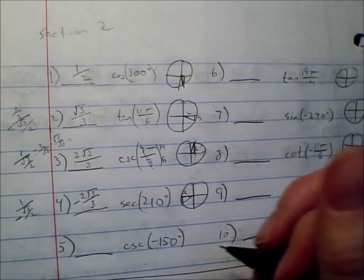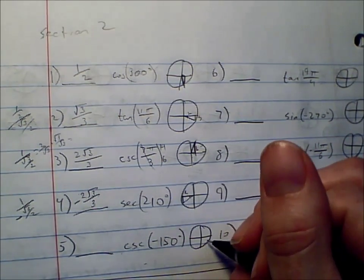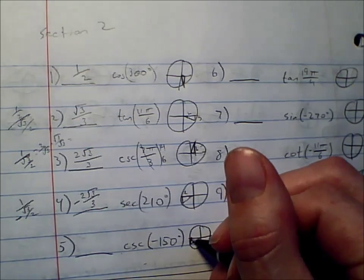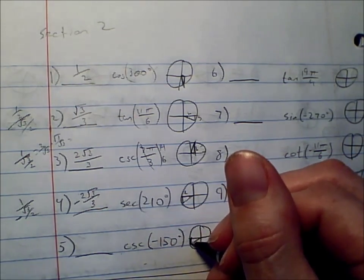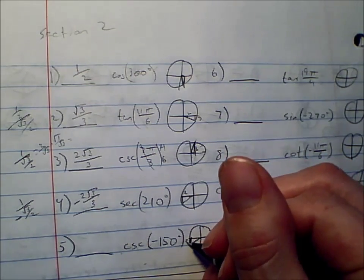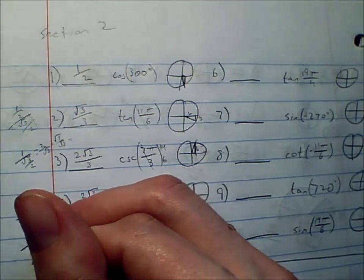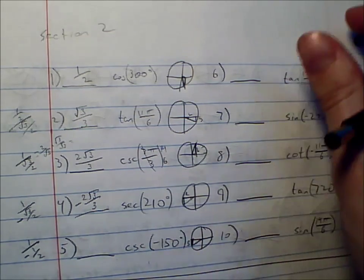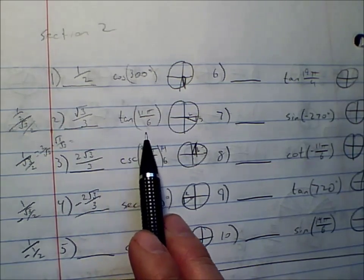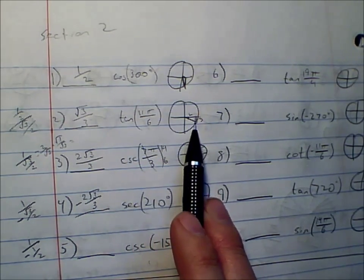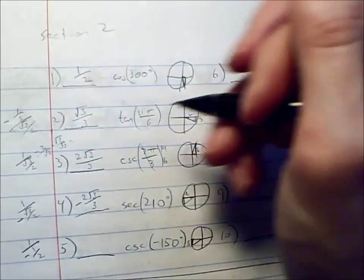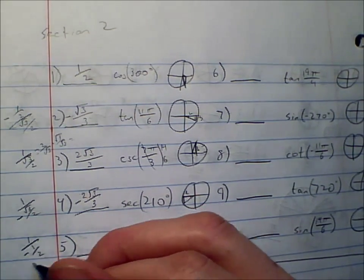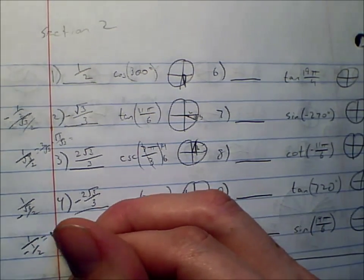Number 5. Cosecant of negative 150 degrees. Let's find negative 150. There's negative 180, so back up 30 degrees, and it's right there. Cosecant would be 1 over the y value, or 1 over sine. This would be the short side of this 30-60-90 triangle. The short side is always 1 half, and it's negative. So 1 over negative 1 half. Speaking of negative signs, I just realized that number 2 should also be negative, because this is a negative y value. So negative 1 half up there, which would be negative square root of 3 over 3. Now back to here. For this one, we're going to flip the 2 over 1 upside down, and you get negative 2.